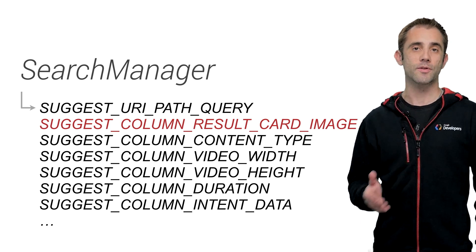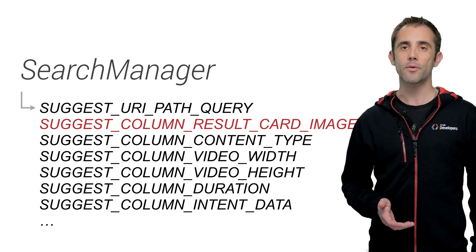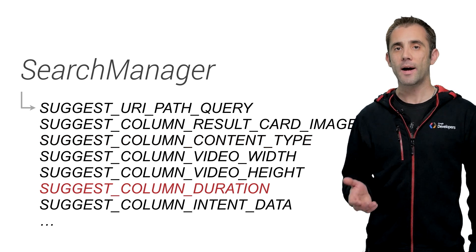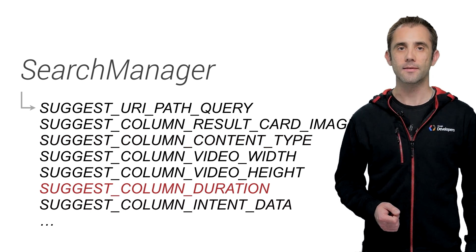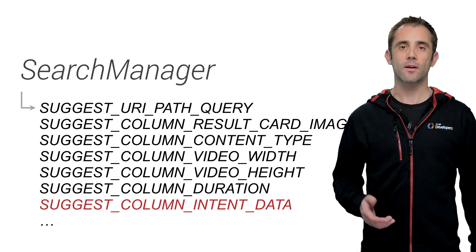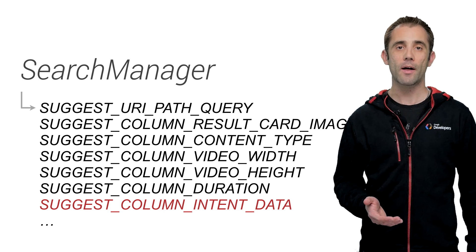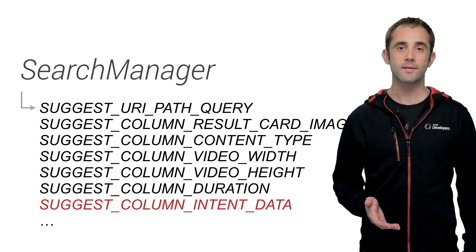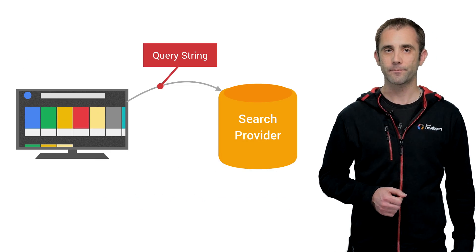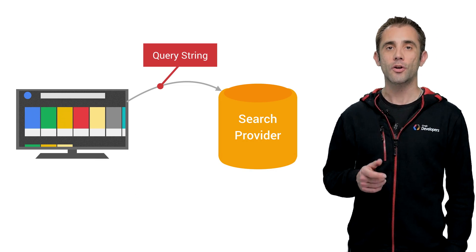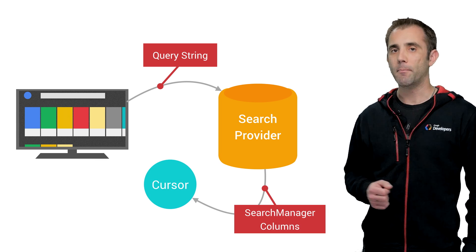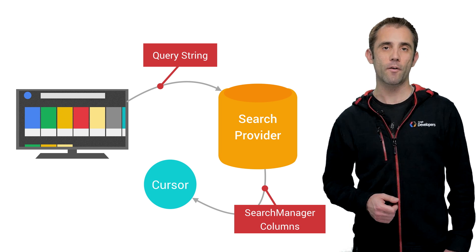Some of these constants include result card image, which is used for defining an image, poster, or cover of your media; content type for your media's MIME type; and duration, which includes time information in milliseconds. You can also define what data should be passed back to your app when a user clicks on a search result by setting an intent data column value, or a combination of intent data ID and a search suggest intent data attribute in the searchable element. Therefore, in the query method, you should gather result data from your data source based on the query string, and then map that data into the cursor by using the predefined column names.